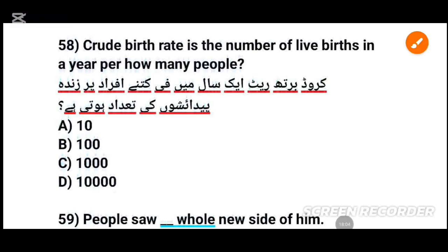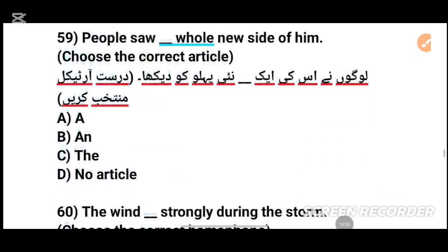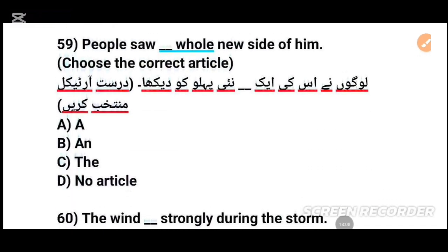MCQs number 59: People saw a dash whole new side of him — choose the correct article. لوگوں نے اس کا ایک نیا پہلو دیکھا — dash کیا ہوگا؟ The answer: 'a whole new side of him' — people saw a whole new side of him.